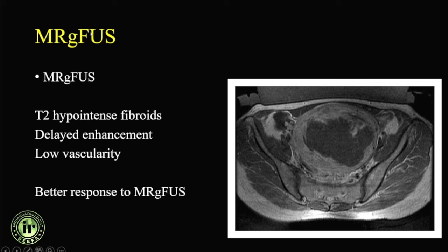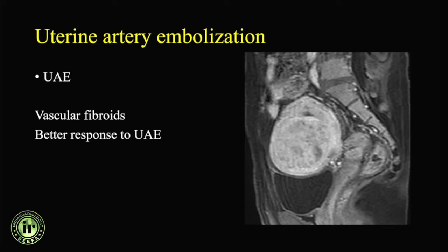For treatment outcome prediction based on MRI features: MRgFUS (MR-guided focused ultrasound / HiFU) works best for fibroids with low vascularity, as less heat dissipates into vessels. Criteria include maximum size of 10 cm, maximum four fibroids, and not positioned too close to bone or large vessels. Fibroids with delayed or less enhancement and T2 hypointensity respond better to MRgFUS, whereas highly vascular fibroids with early dynamic contrast pickup respond better to uterine artery embolization.